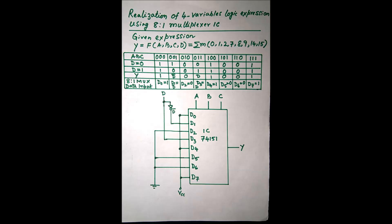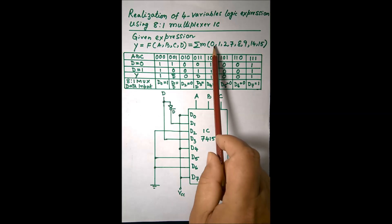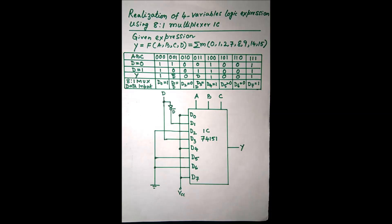After drawing the circuit diagram, we have to go to the lab and make the connections. In the lab, we will vary A, B, C, D and verify that the output goes high for whichever minterms are present. Let us go to the lab now.